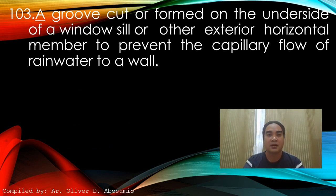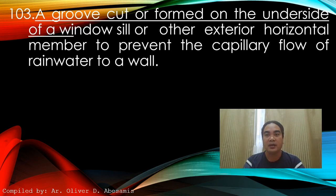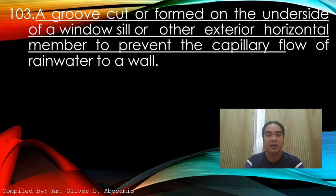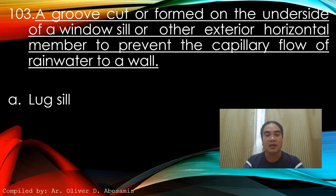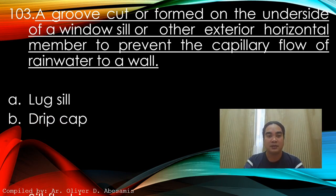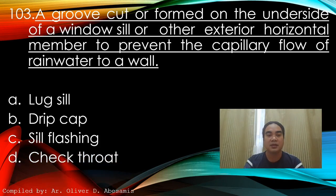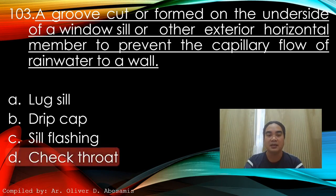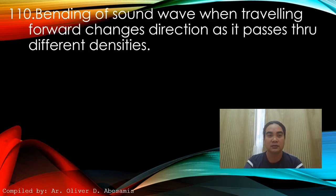Question 103: A groove cut or formed in the underside of a windowsill or other exterior horizontal member to prevent the capillary flow of rainwater to a wall. A) Lag seal, B) Drip cup, C) Seal flashing, D) Check throat. Answer: D) Check throat.